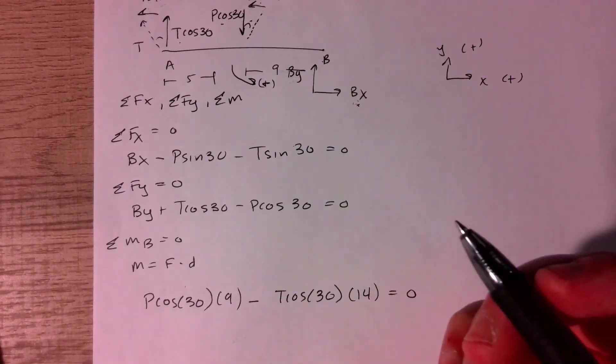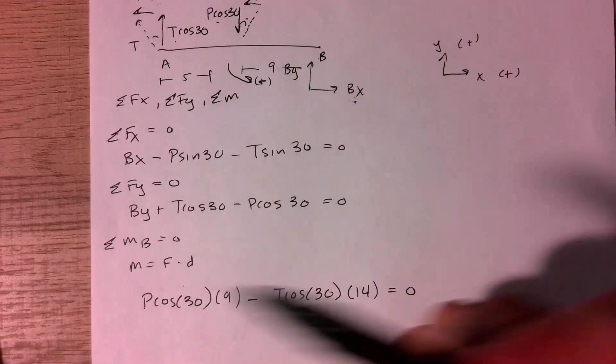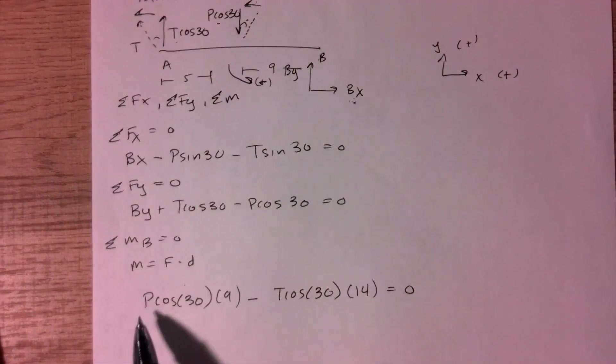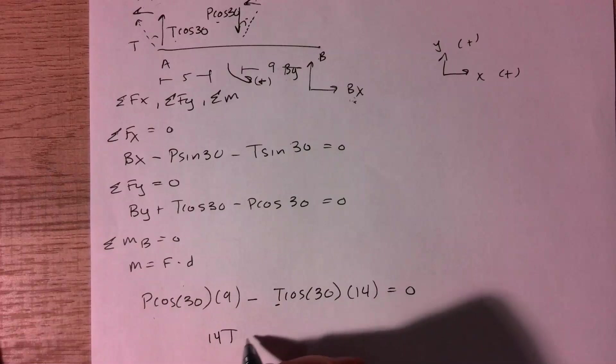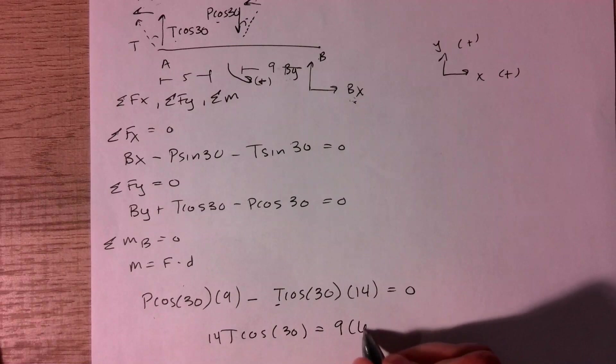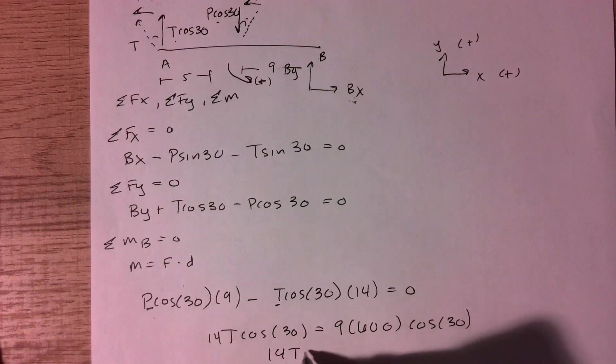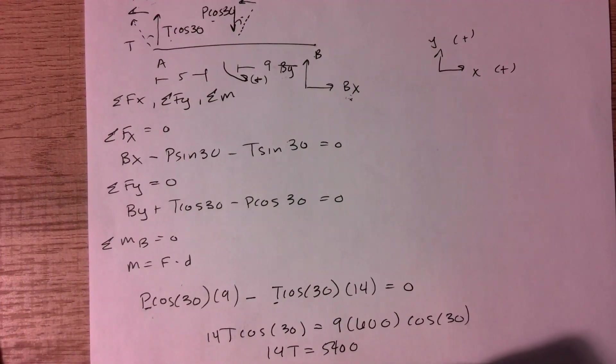So as we can see here, we have different equations. We have three of them. So for every unknown, we want one equation. So we have three unknowns and three equations. And so the easiest one to solve is going to be this last one here because we only have one unknown, which is the value of T. So we can say that 14 T cos 30 is equal to nine times 600. So I'll substitute in the value of the P here, cosine 30. And so 14 T is equal to 5400. And so we can divide by 14. And then we get that T is equal to 368 pounds.